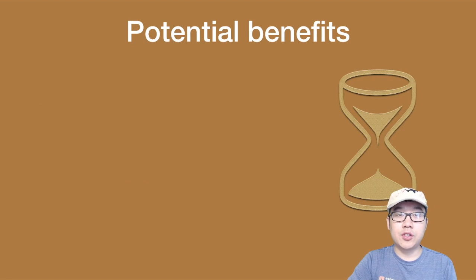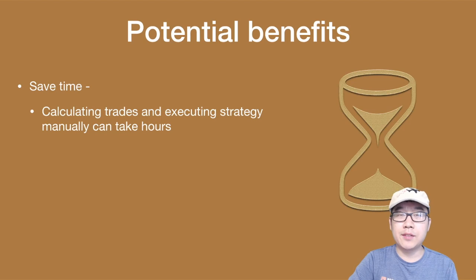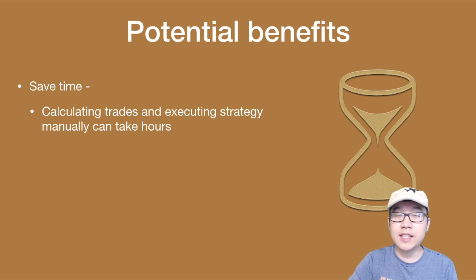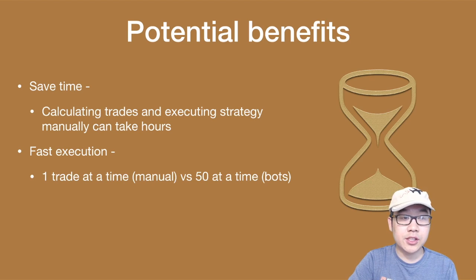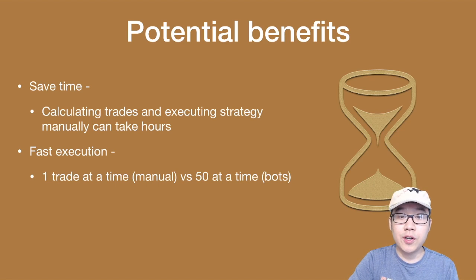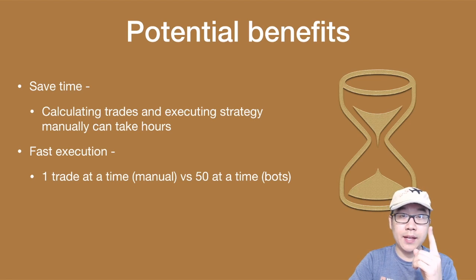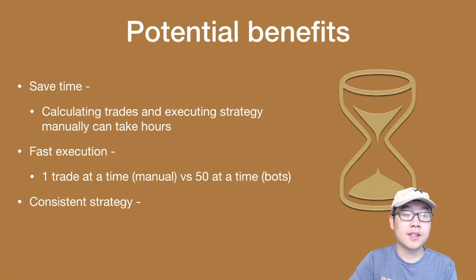What are some potential benefits of trading bots? First, it could save you a lot of time, because if you calculate your trades by hand and execute the strategy manually, that could take hours depending on how many times your strategy is set to be executed. Also, quick and fast execution — if you do it manually you have to do one trade at a time, but with software they can execute maybe 50 trades in the time it takes you to do one manually. That's a big benefit.